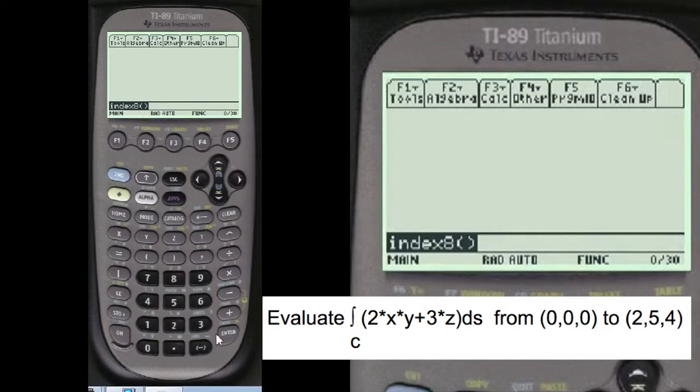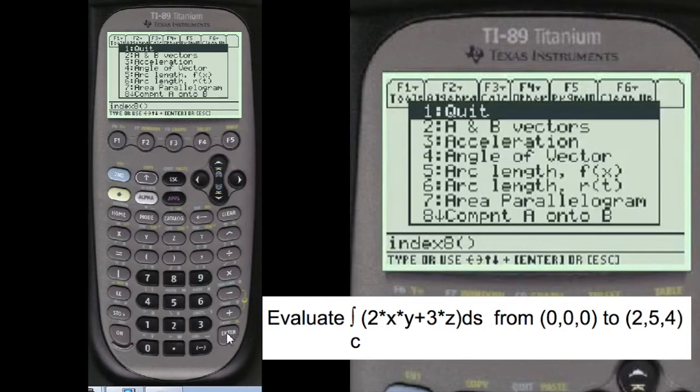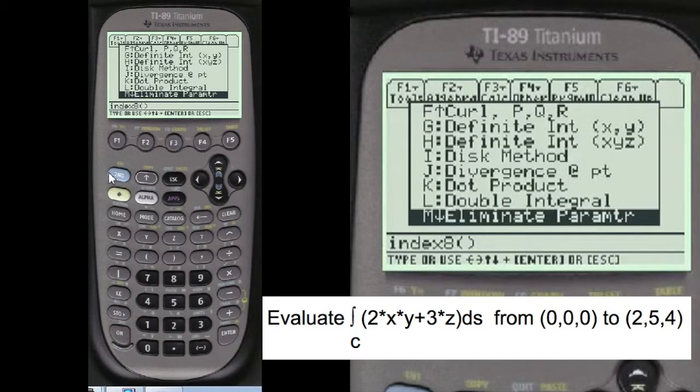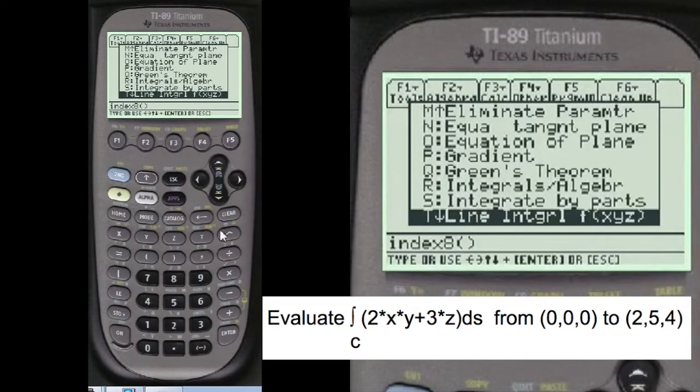Let's do an index 8 to get to my menu, and we're going to press 2nd and the cursor down so we can go screen by screen to get to the L section, which is line integral here.